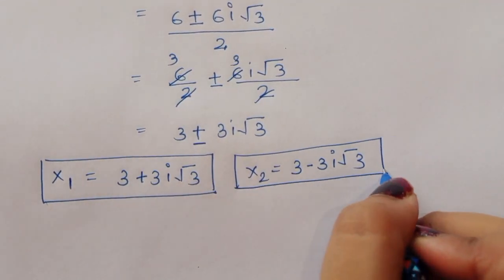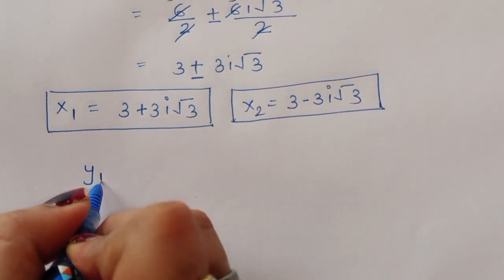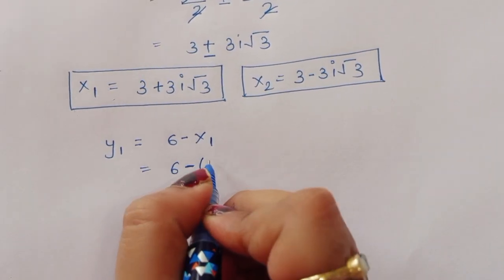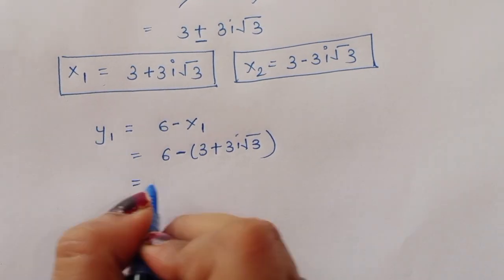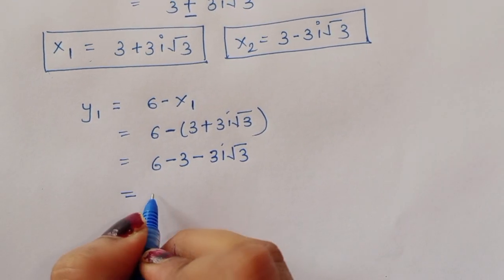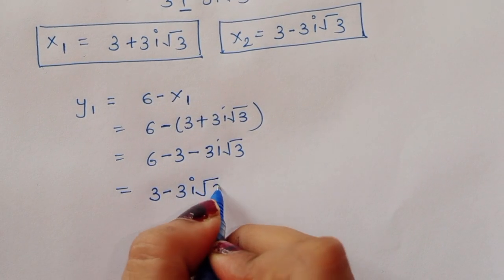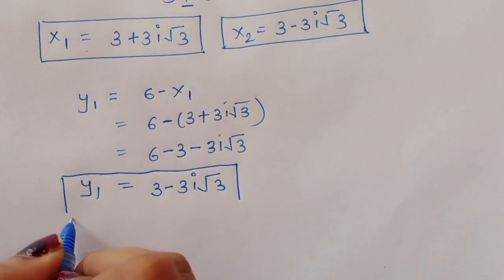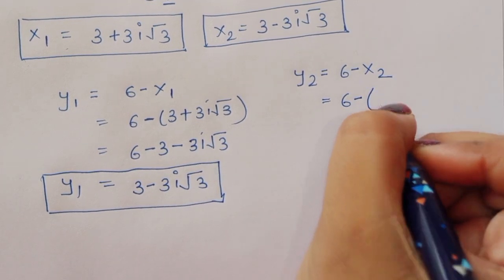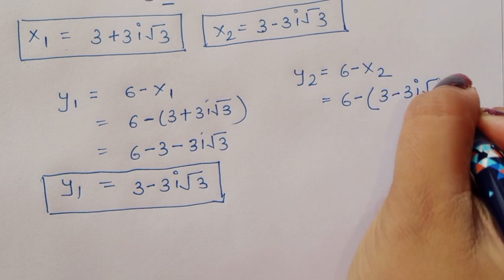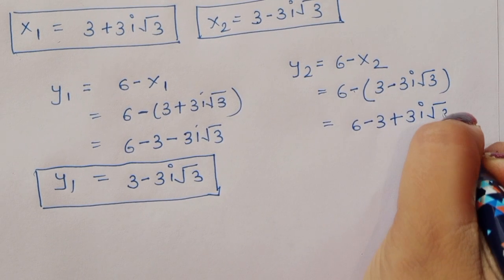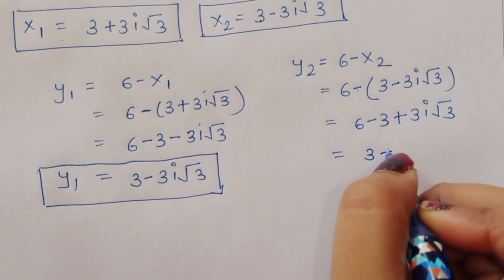Now we find y₁ and y₂ using y equals 6 minus x. y₁ equals 6 minus x₁ equals 6 minus (3 plus 3i√3) equals 3 minus 3i√3. And y₂ equals 6 minus x₂ equals 6 minus (3 minus 3i√3) equals 3 plus 3i√3.